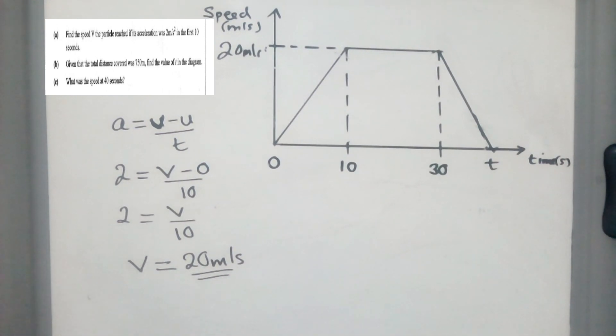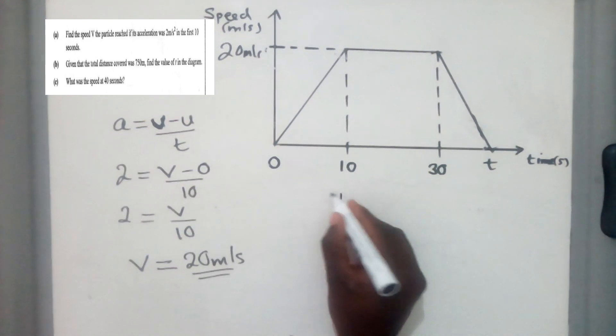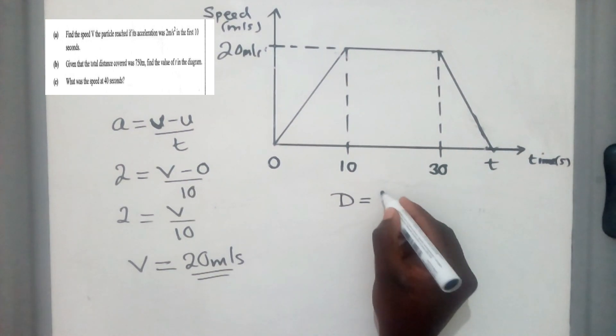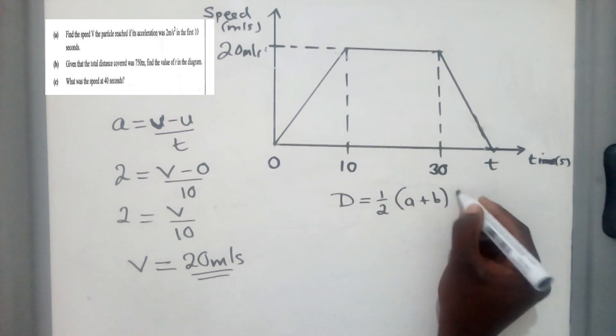The next question reads, given that the total distance covered was 750, find the value of t in the diagram. So you can see this t over here. So for us to find this t, since we've been given distance, we'll use the formula for finding area of a trapezium, which is this one. This is how it looks like.